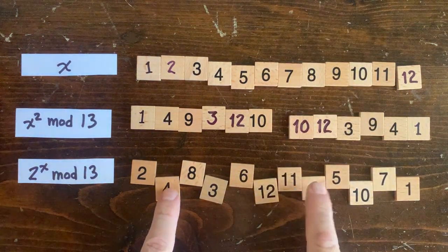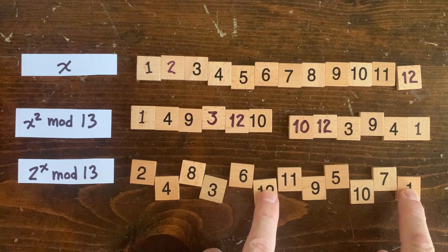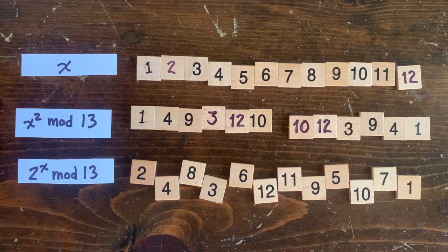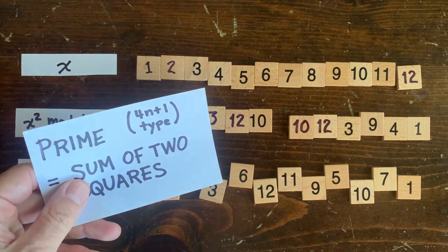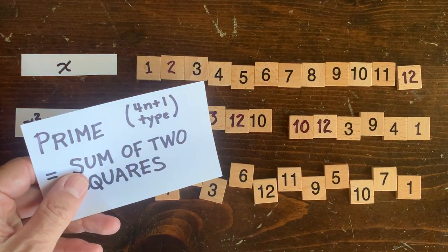By the way, this pairing up of even x's only works if p is of the form 4m plus 1, like 13 or 17 or 29. That's why Fermat's theorem is limited to those kinds of primes.